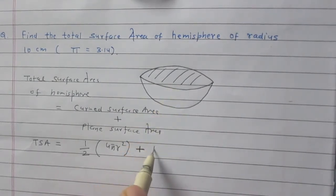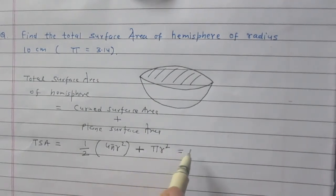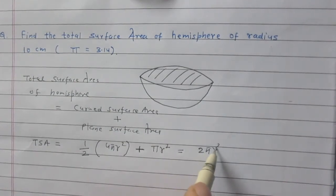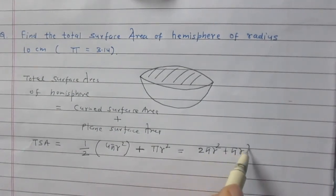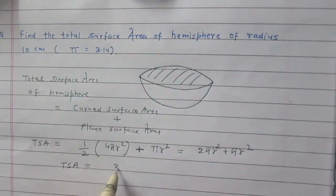So area of circle is πr². So, total surface area of hemisphere is 2πr² plus πr². So we can say that total surface area of the hemisphere is 3πr².